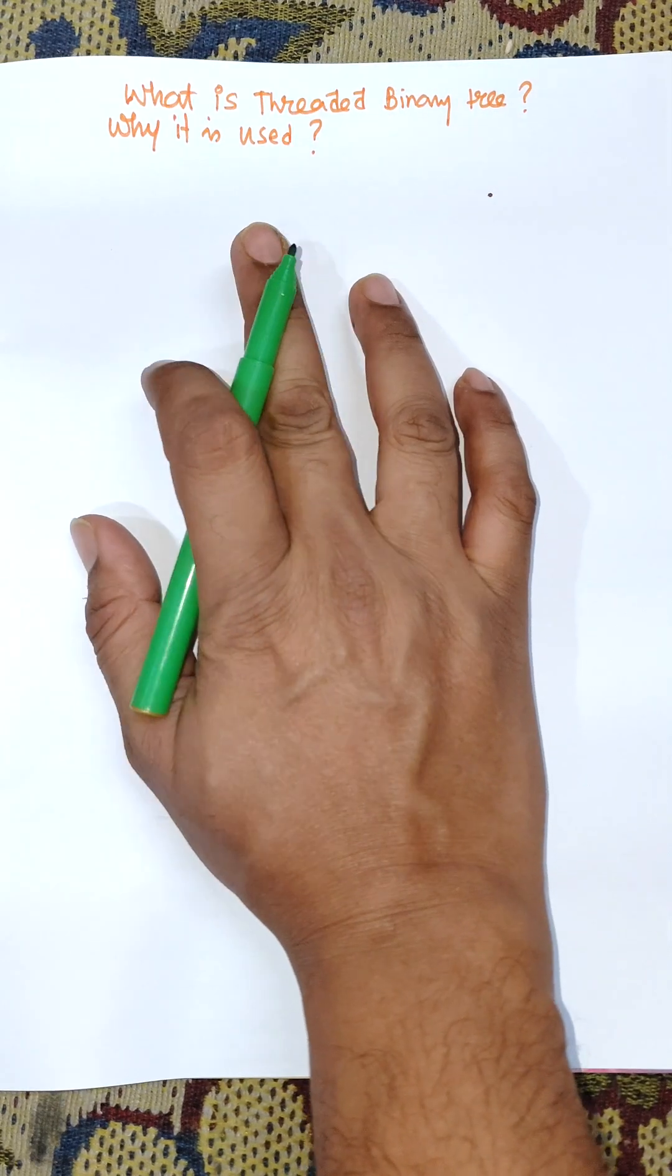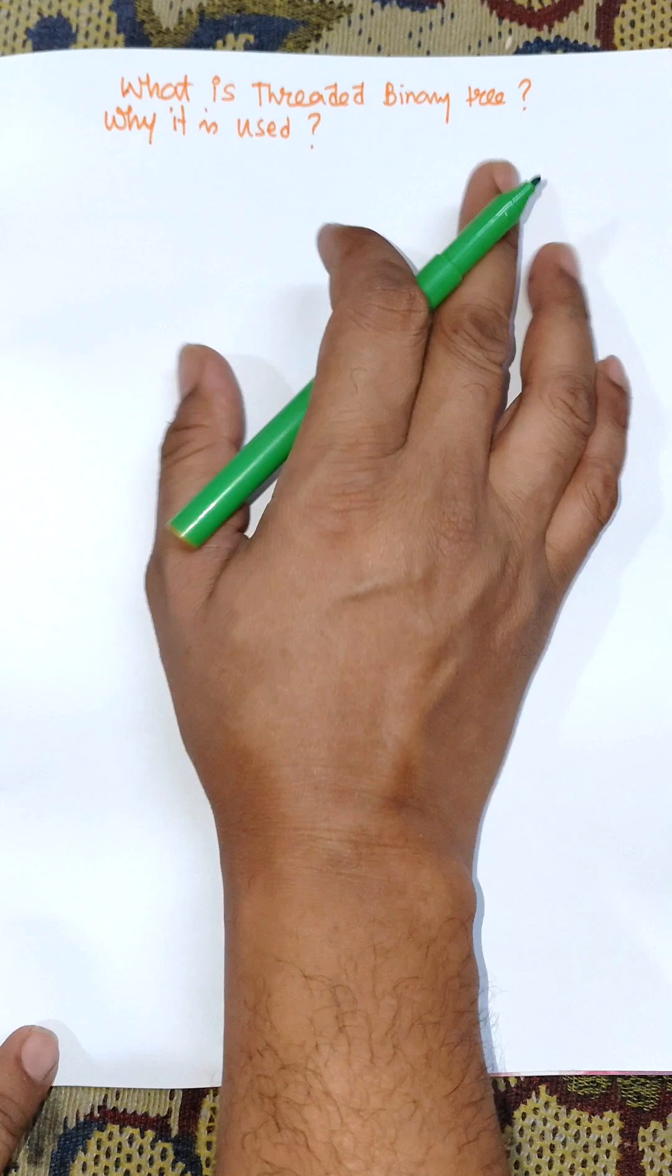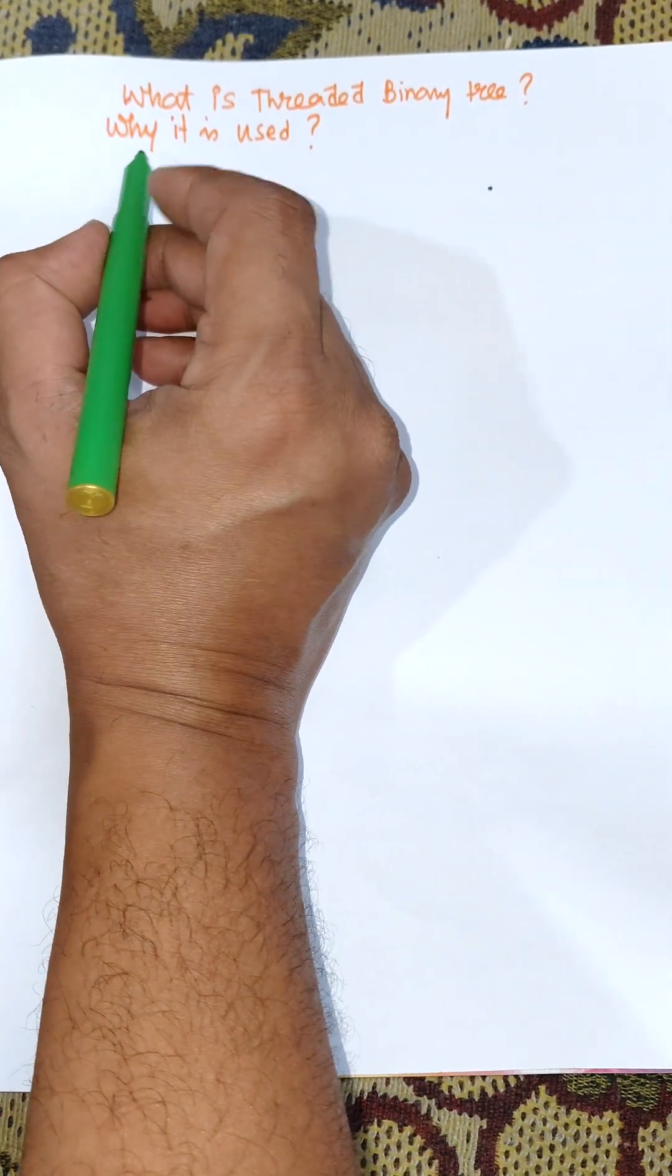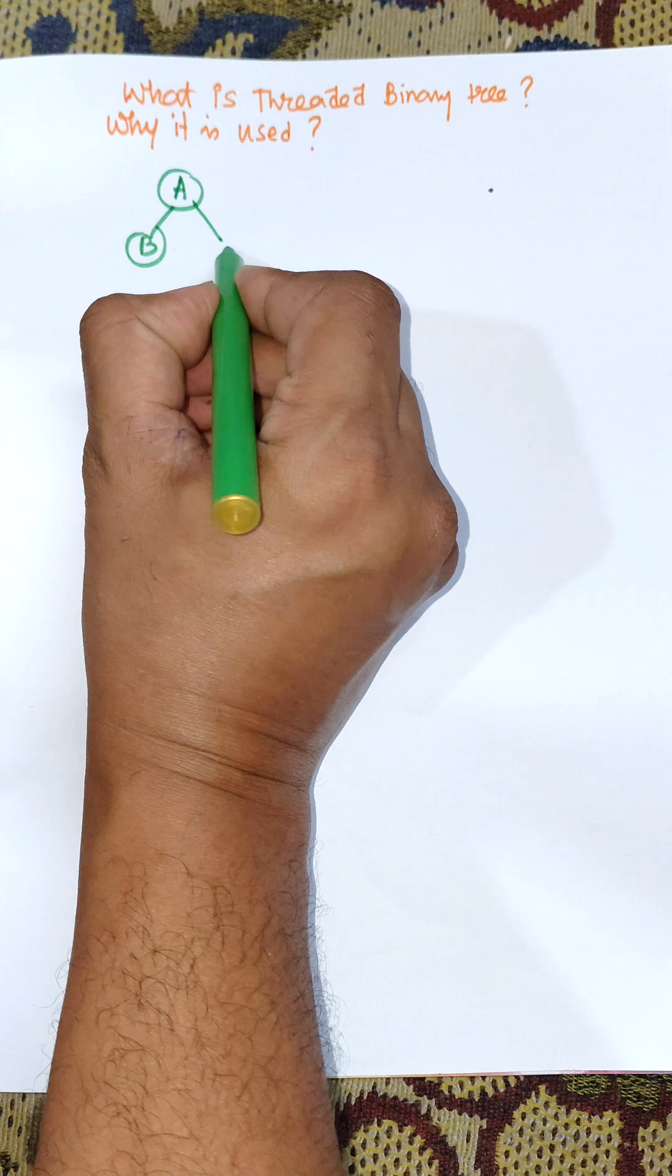In this video I am going to discuss threaded binary tree and why it is used. This is part one of threaded binary tree. We know in linked list presentation of binary tree, consider the example: suppose A, B, C, and D.